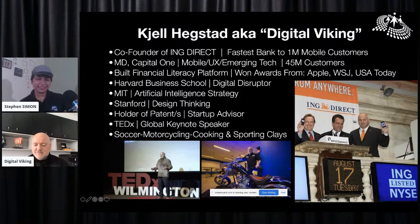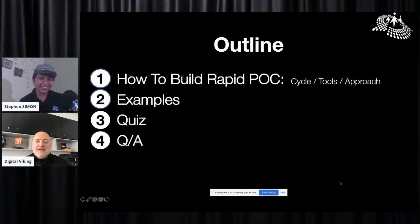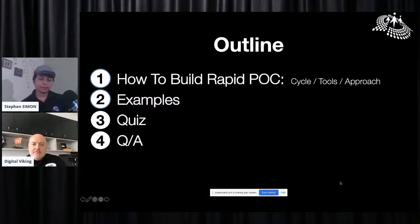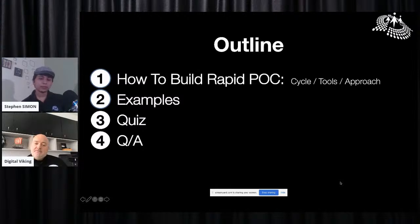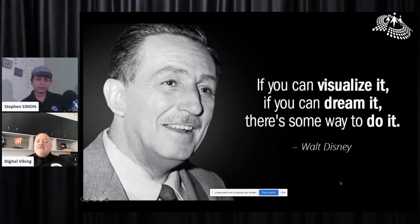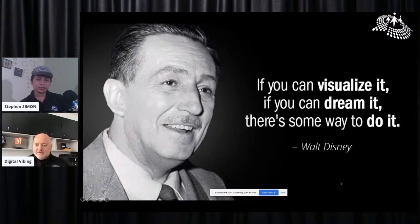Here's basically the outline of what I want to do today. Think of this as a 30-minute session. I'm going to spend 20 minutes talking about how to build a rapid POC — the product cycle, the tools you should have, and the approach you should take. I'll give you four examples of POCs I've been involved with, then we'll take a quiz and do Q&A. The bottom line is there is no better way to visualize an idea than to build a proof of concept. Absolutely none — because most people will tell you, I can hear you, but show me.